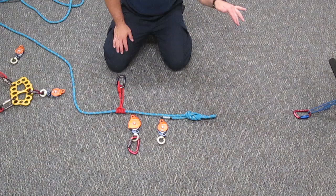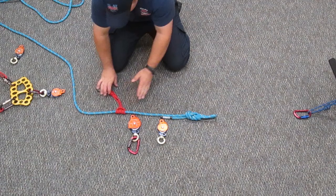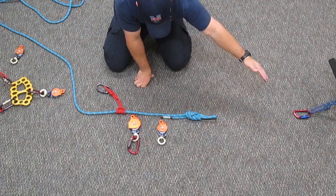Otherwise, if you don't have that issue of a high directional or a steep slope or drop-off of any kind, you can disregard your rope grab and have your traveling pulley attached at the end of your rope at the load.